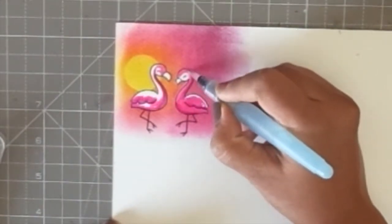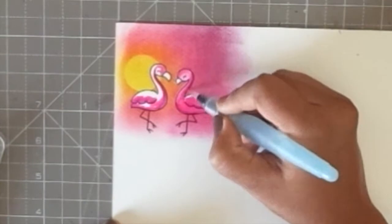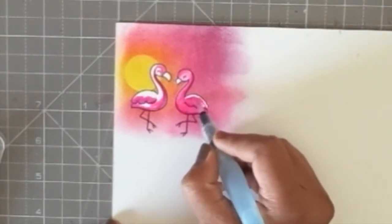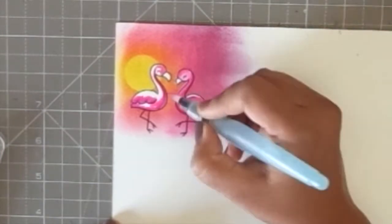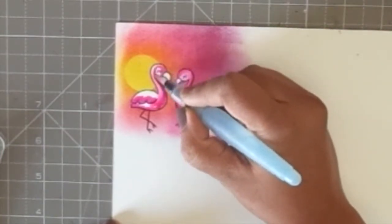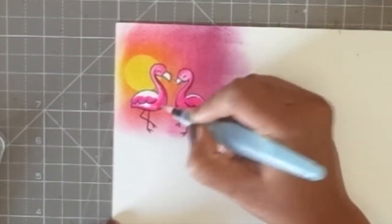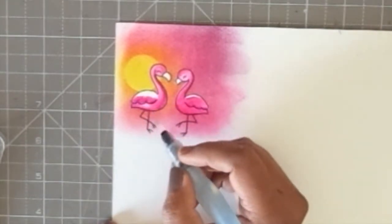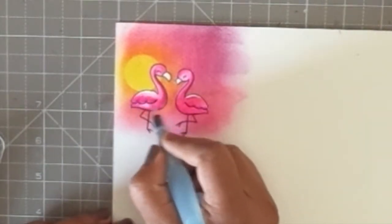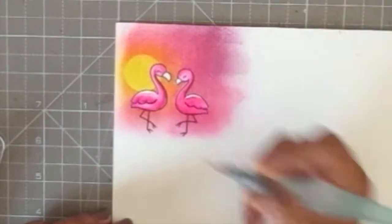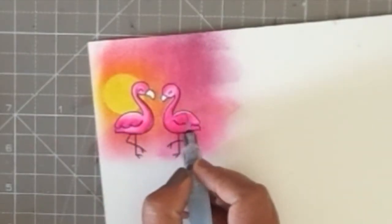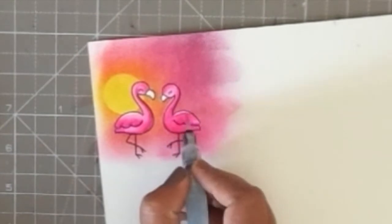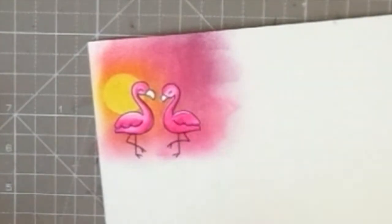I will again list down the exact numbers of the pen that I've used in the description box. Now I'm blending these colors with a water brush. You could use a regular brush and some water and that works perfectly fine too, but I just find the water brush a little bit neater and non-messy so I prefer to use this.